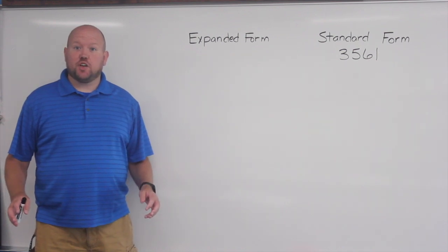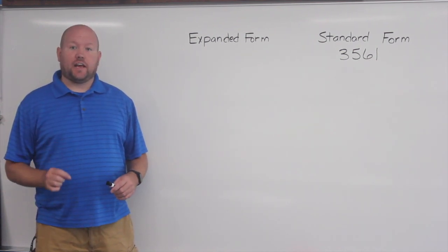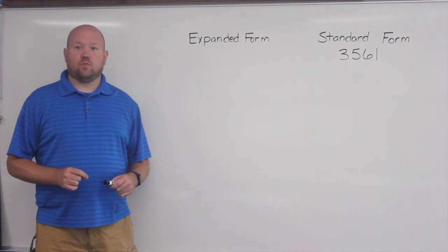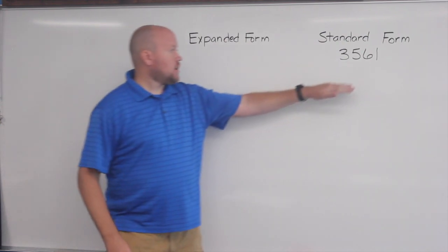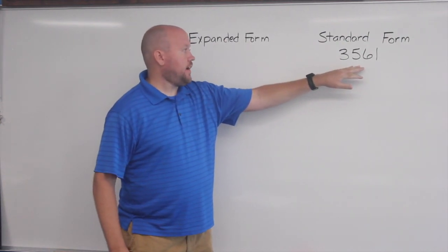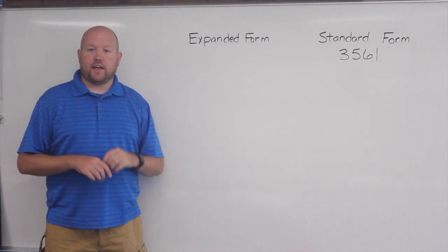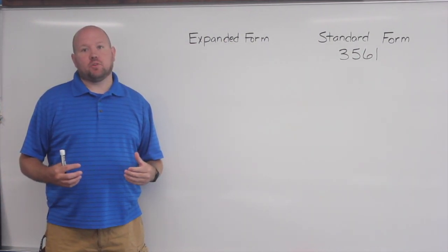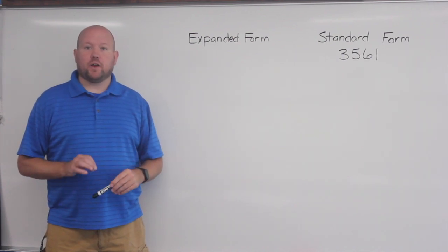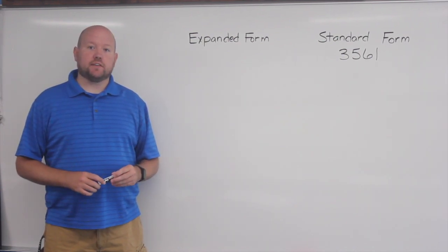The next thing students should know is the difference between standard form and expanded form. When we write a number like this, 3,561, we refer to that as the standard form. That's just the way that we're going to typically write numbers. But we want to be able to break that number up into all of its different place values.